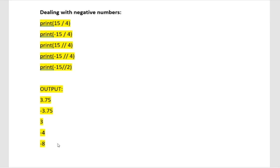These are some of the variations — do more practice and you will be clear about how to deal with positive numbers, negative numbers, integers, and floating numbers with true division and floor division. I hope you are clear with all these examples. If you still have any doubt, you can always ask in the comment section. Thank you so much.